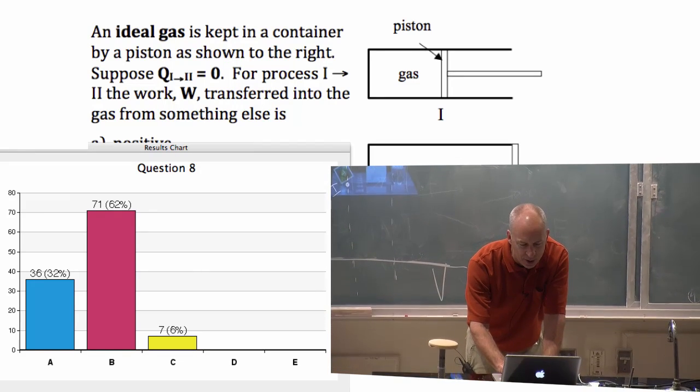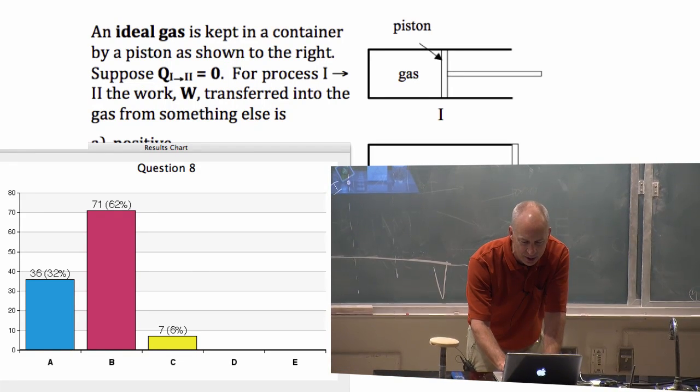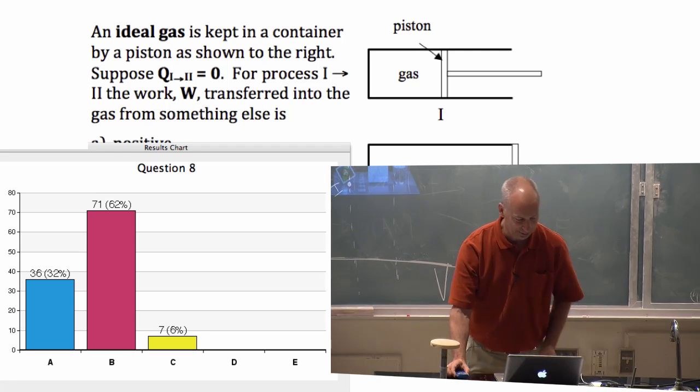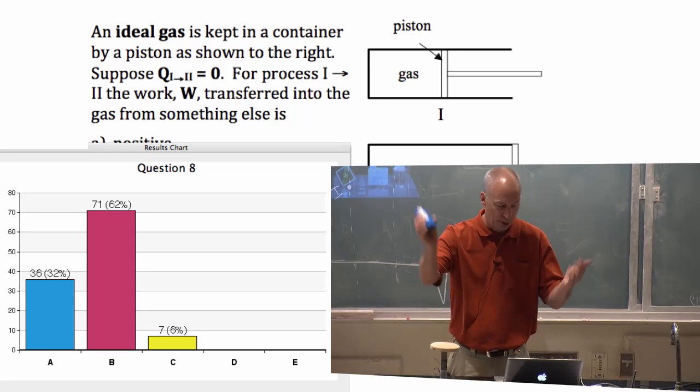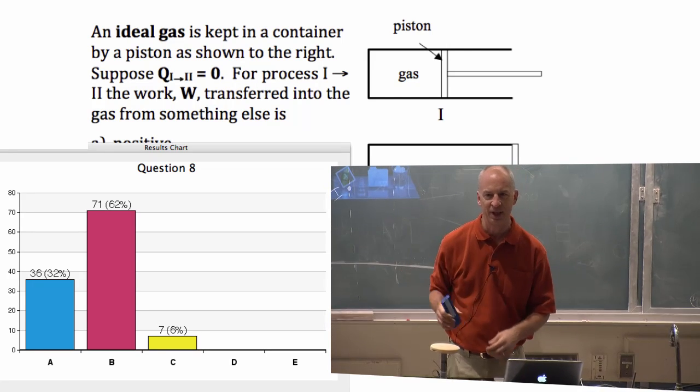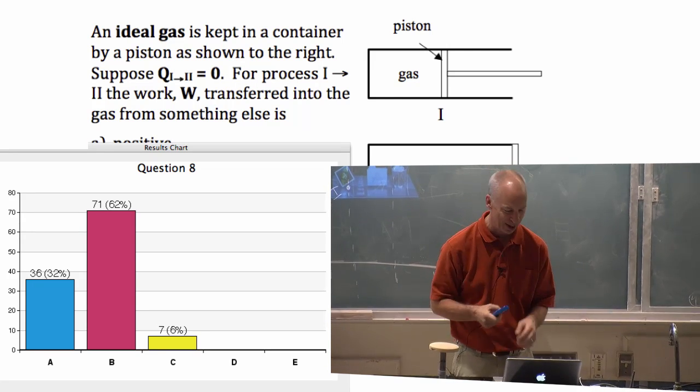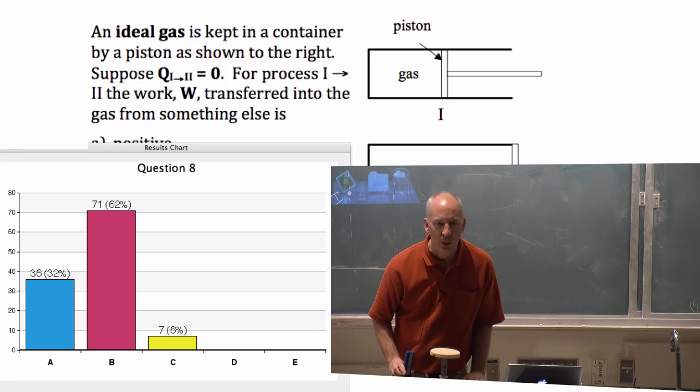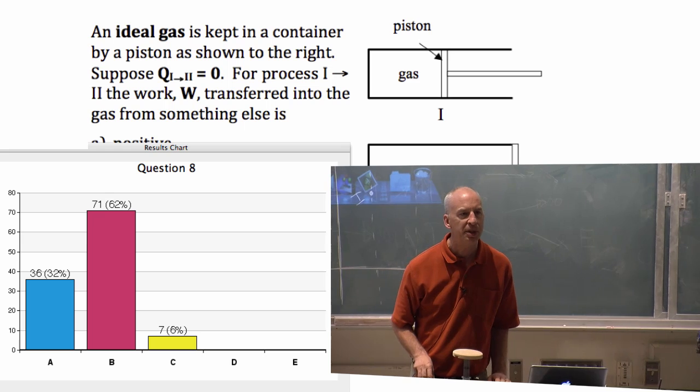Okay, so two-thirds of you saying negative, one-third saying basically positive. Those of you who said negative, why am I picking negative? I like the negative answer, I like B. What made you think W is negative?